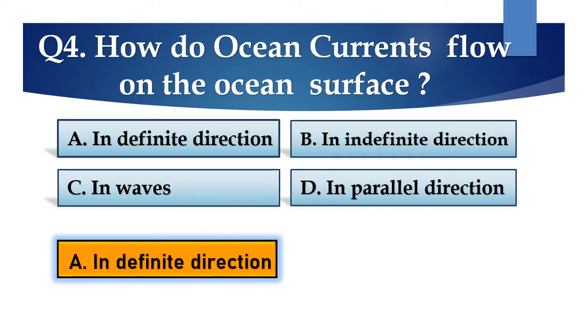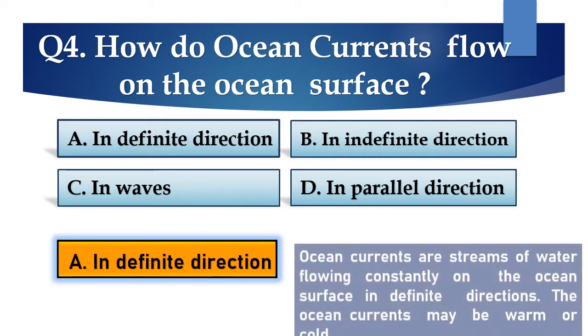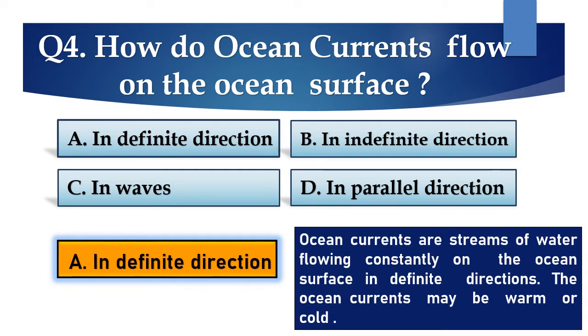Answer is A. In definite direction. Ocean currents are streams of water flowing constantly on the ocean surface in definite directions. The ocean currents may be warm or cold.